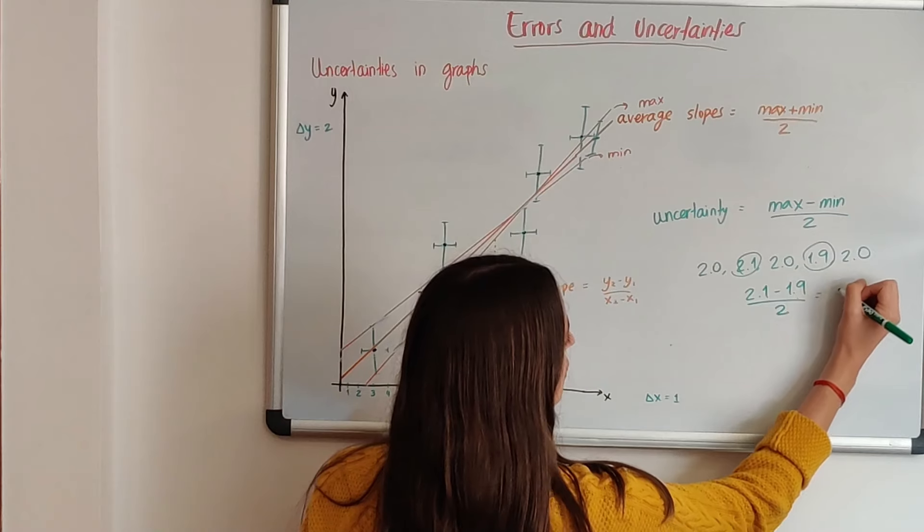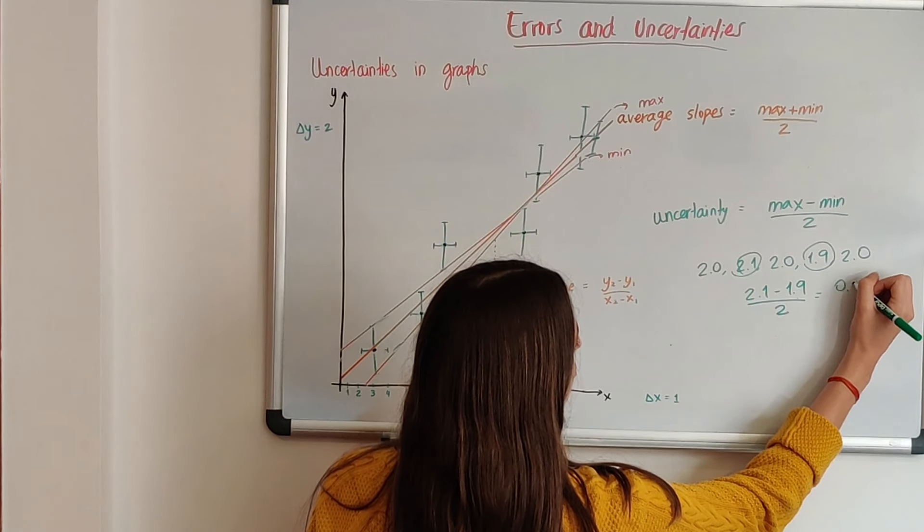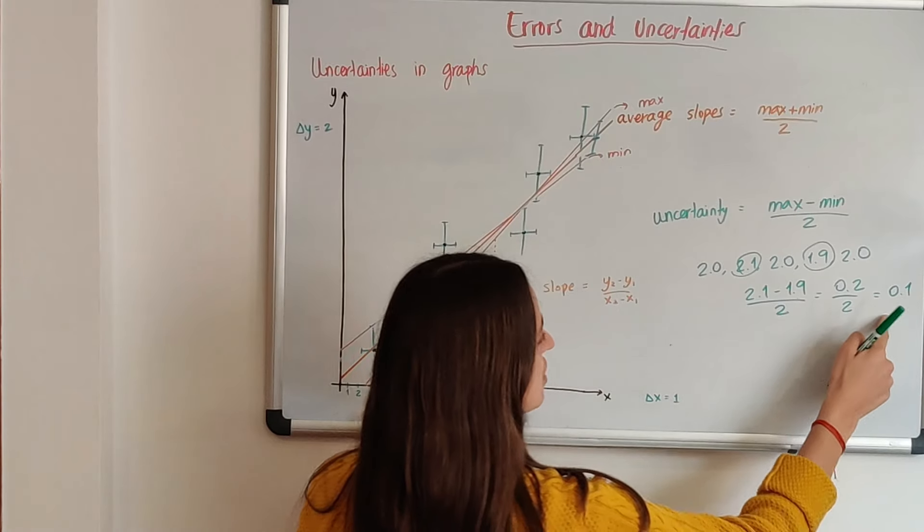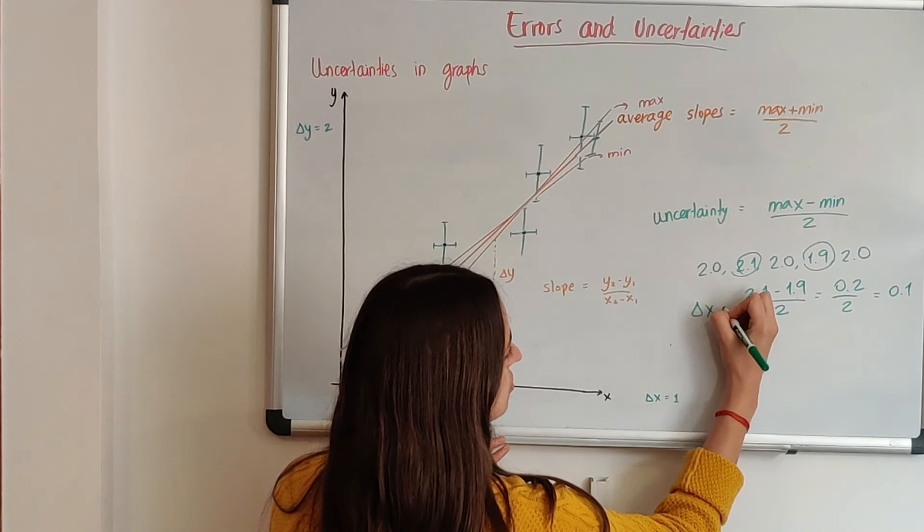This has a distance of 0.2 divided by 2 is 0.1. So this would be the uncertainty of your value.